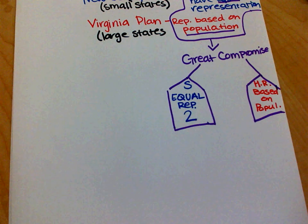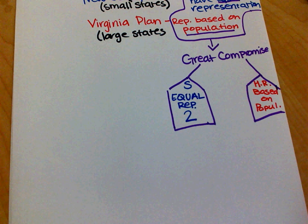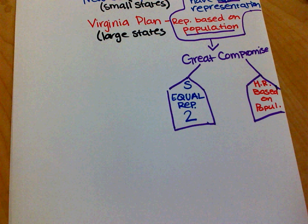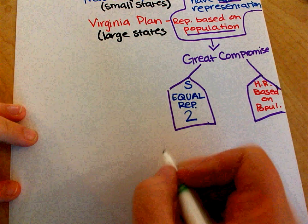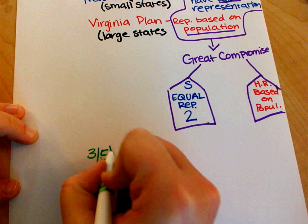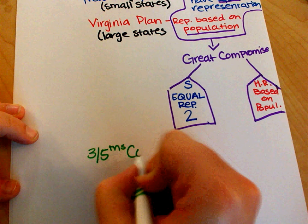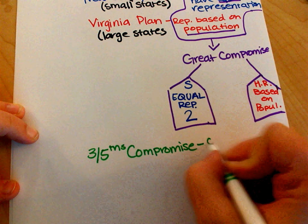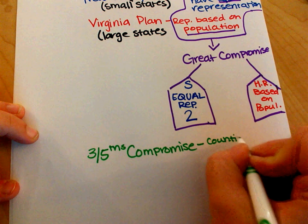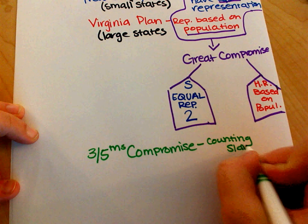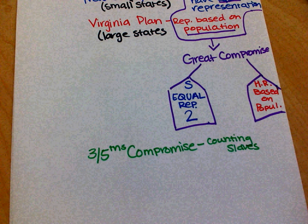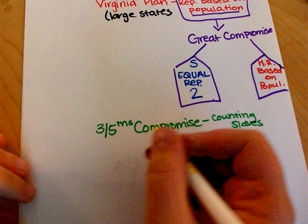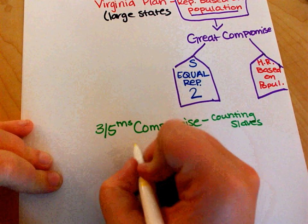Next, we're going to talk about representation of African Americans or slaves, and things are going to get a little bit messy. This one I'm going to title the Three-Fifths Compromise — counting slaves.